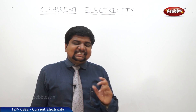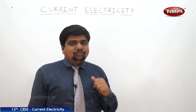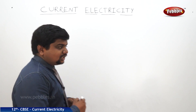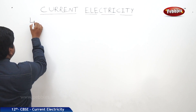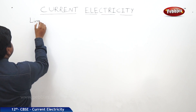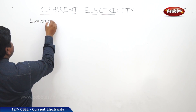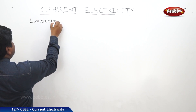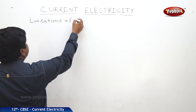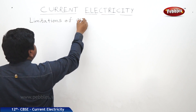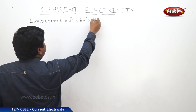Now we will see what are the reasons for not obeying Ohm's law. Those are said to be limitations of Ohm's law.